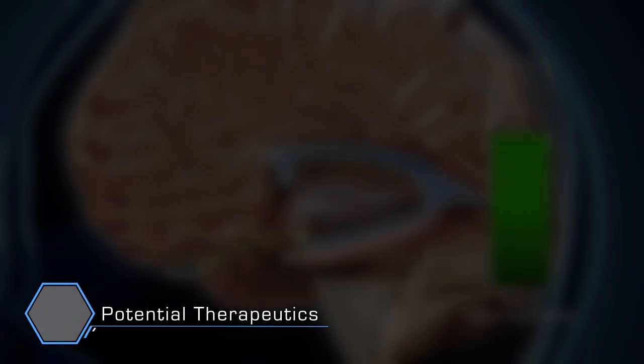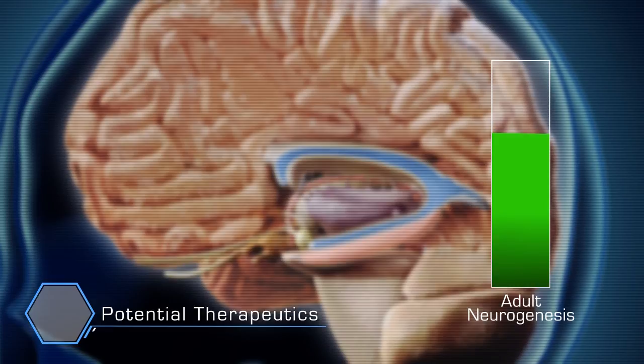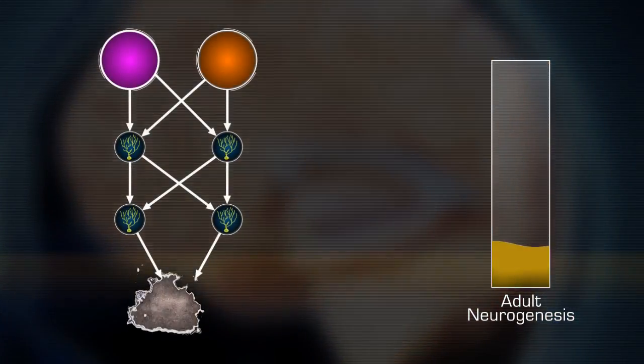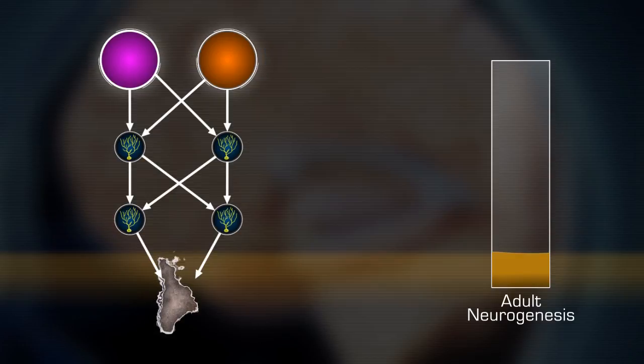In our lab, we also study human loss of function of adult neurogenesis in the hippocampus, which has been linked to a poor ability to discriminate between scenes or episodes in one's life, causing misinterpretations of emotional states.